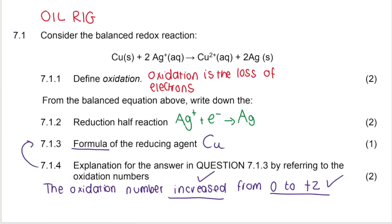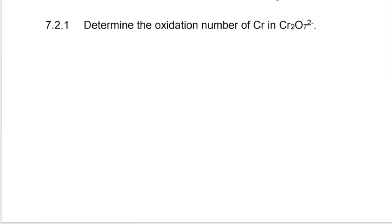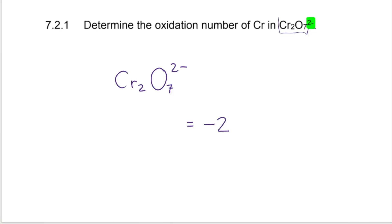Our next question says the following incomplete chemical equation represents a redox reaction. They want me to determine the oxidation number of Cr in Cr₂O₇²⁻ — a nice tricky one. Let's break it down. This is an ion with a charge of negative 2, and that means the sum of the oxidation numbers within this ion needs to add up to negative 2.